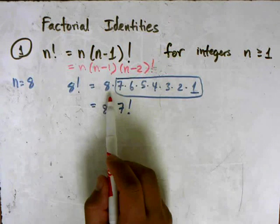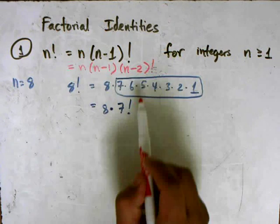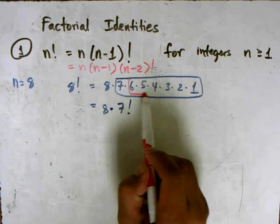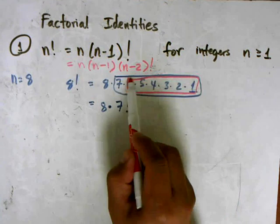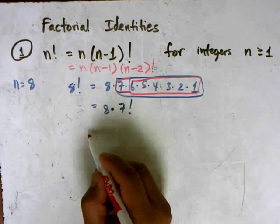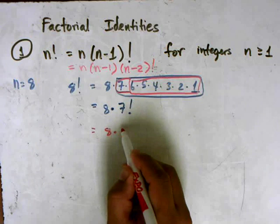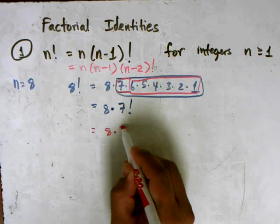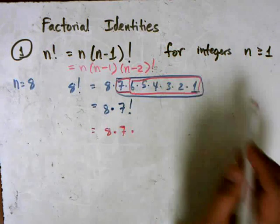And that's like saying, if I took this example here with 8, and I regroup, and I grouped it one more time using the red ink here. So that would tell me that it's 8 times 7, and the rest of it is 6 factorial.